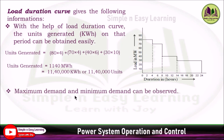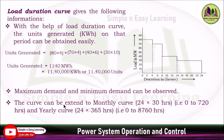The maximum demand and minimum demand can be observed easily from the load duration curve — the maximum demand is 80 megawatt and the minimum demand is 30 megawatt. This curve can be extended to a monthly curve by multiplying by 30 days, giving 24 × 30 = 720 hours, and to a yearly curve by 24 × 365 = 8,760 hours. Using this curve, all this information can be obtained.